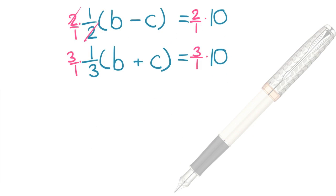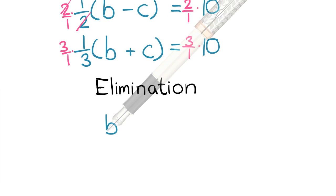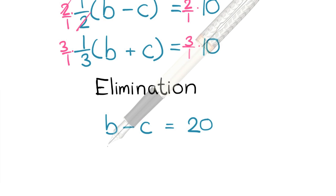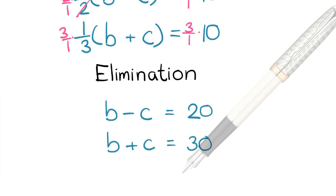Now we're going to see both the method of elimination and substitution. First, elimination. Now we have the standard form from the above, which is b minus c equals 20 and b plus c equals 30.